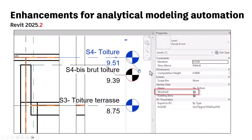If you have levels very close together — for example the finish of the slab and the finish of the floor — you can check 'structural.' It will give more weight so the analytical model will go to the level which is checked as structural.